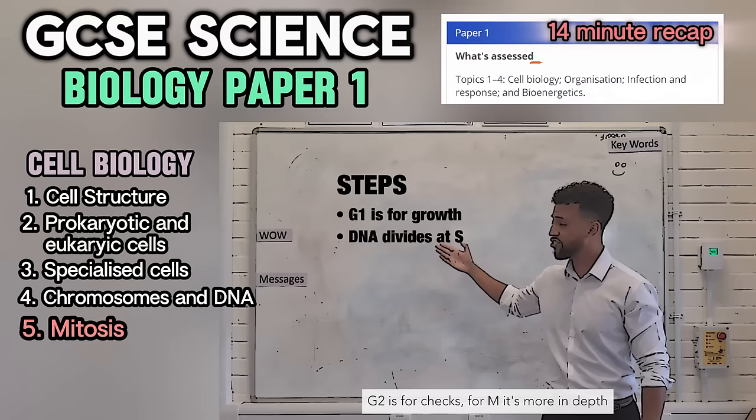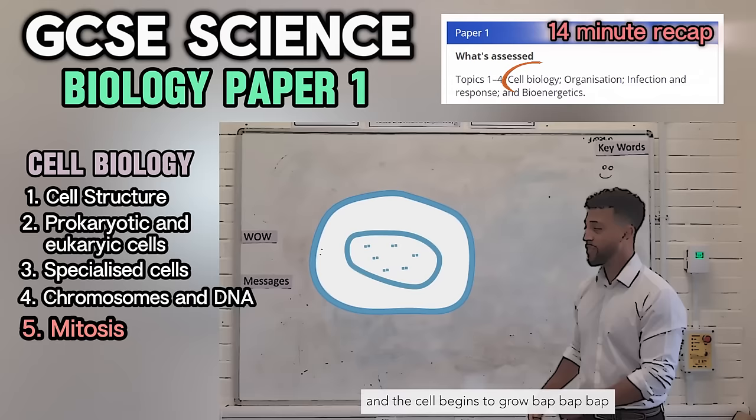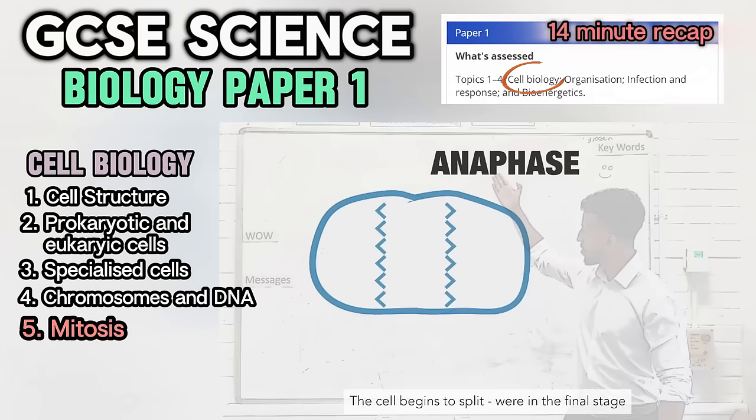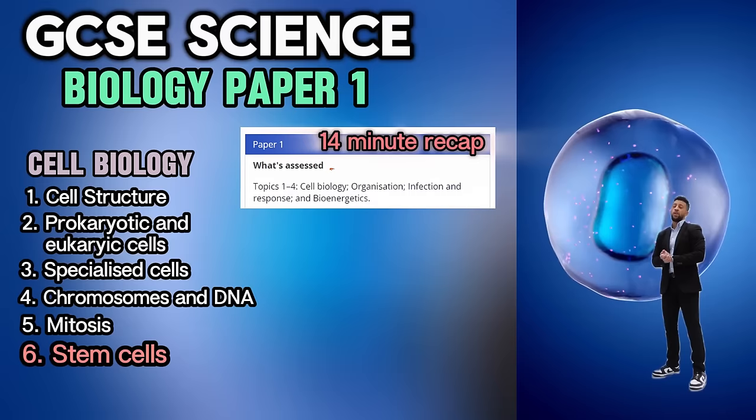Interphase is when the DNA gets bigger and the cell begins to grow. Then prophase is when the nuclear envelope fades and the DNA begins to show as chromosomes. Metaphase — they all line up at the plate. Once they pull away it turns to anaphase. The cell begins to split — we're in the final stage. The nucleus reforms — that's telophase.